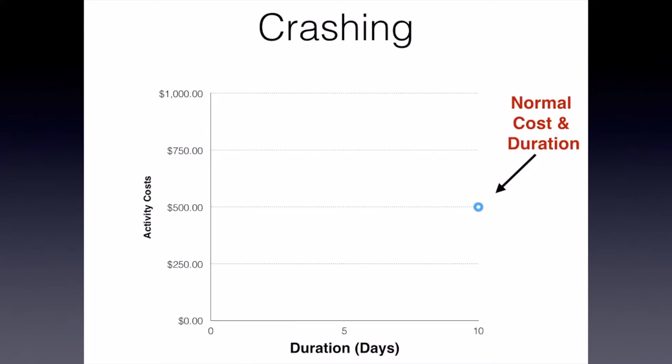Here we have a graph that shows the cost of an activity versus the time that it takes. We have a point here of our normal cost and duration — so this particular task is going to take 10 days and cost us $500.